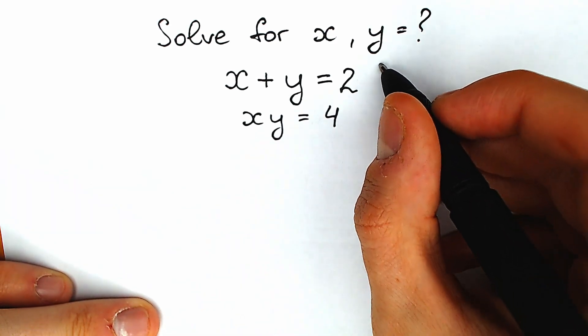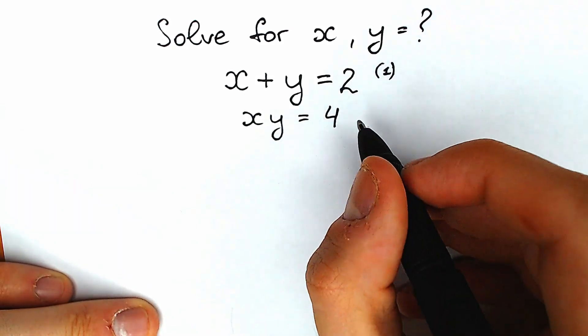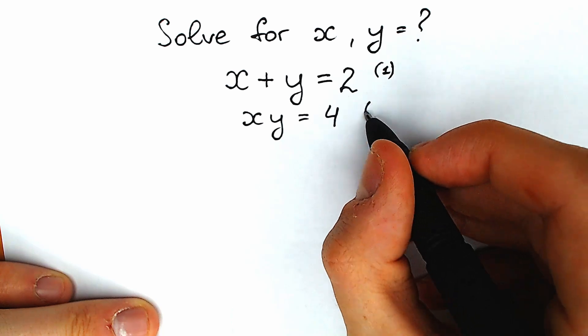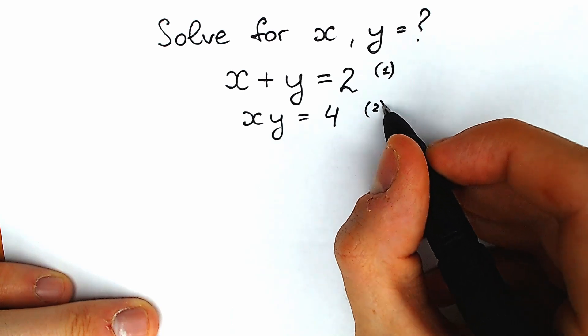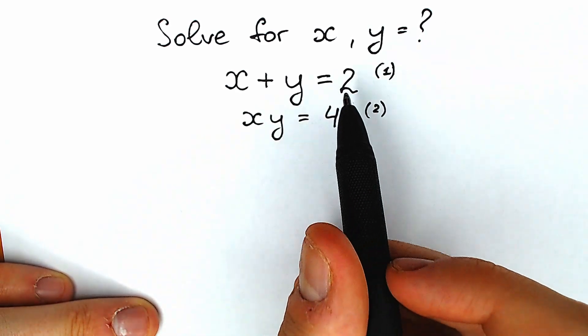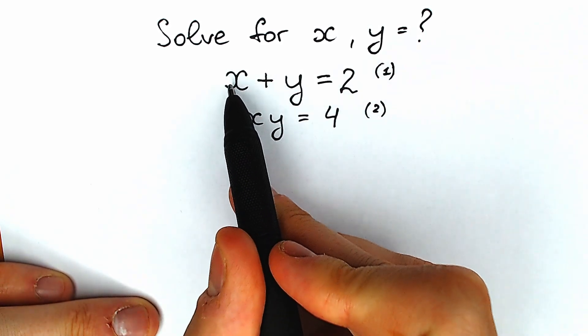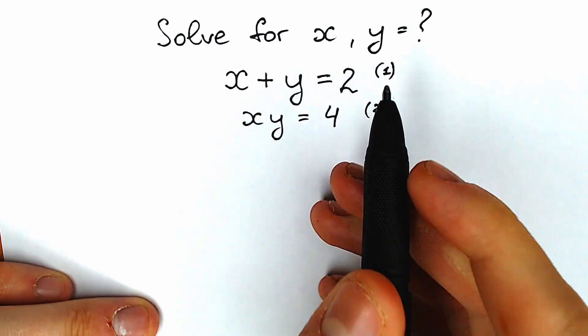First of all, let's call this the first equation and let's call this one the second one. From the first equation, let's find our x. x equals 2 minus y.